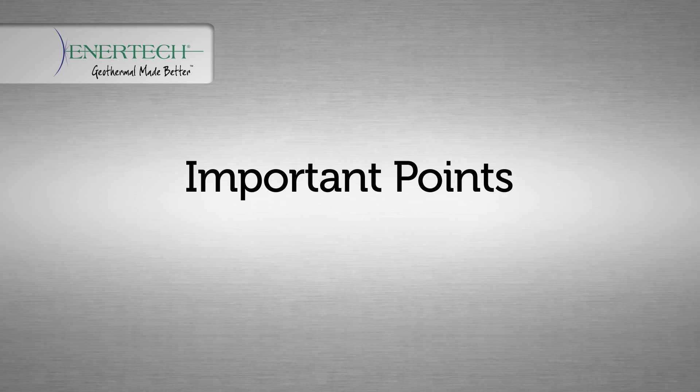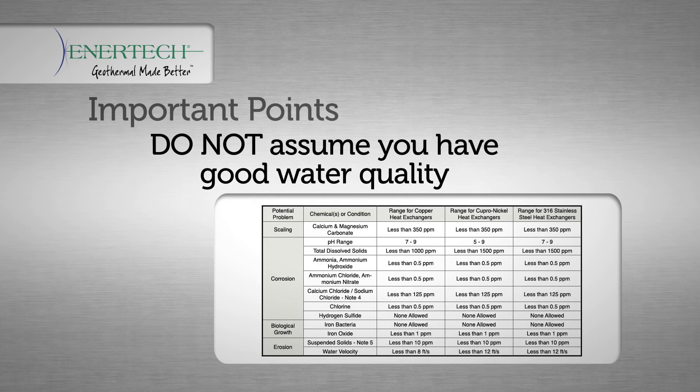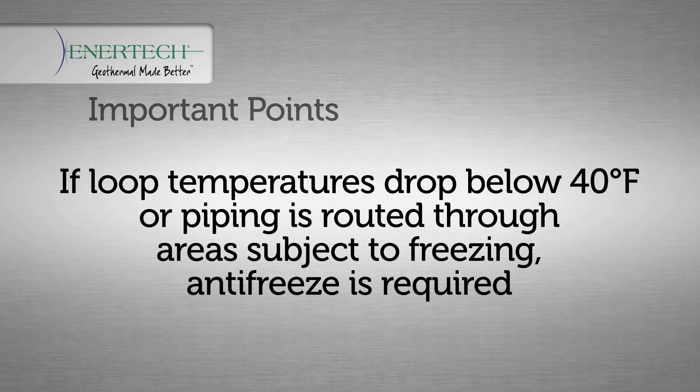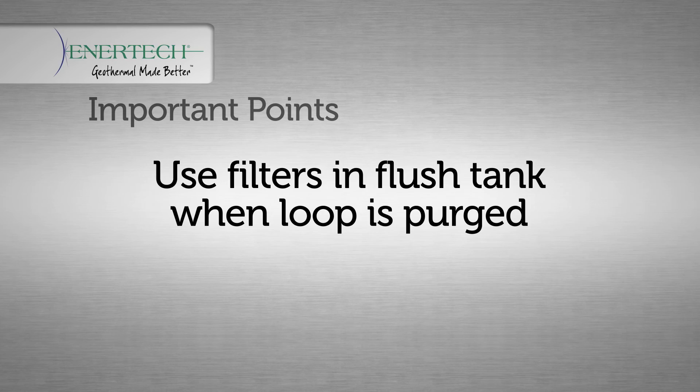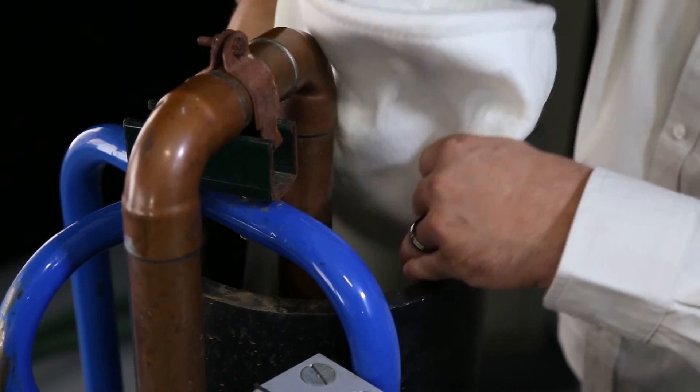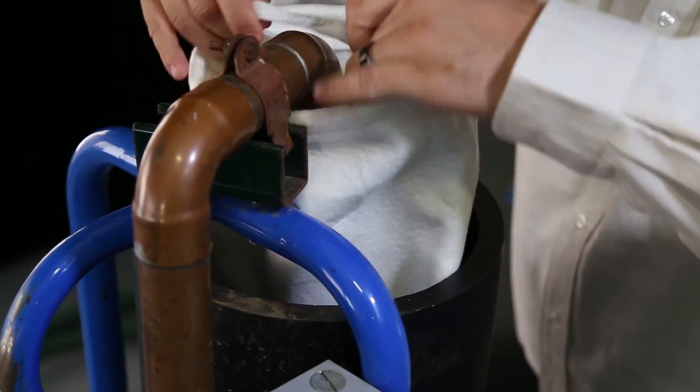Some other important points. Don't assume you have good water quality. Water quality should be tested and compared to the installation manual water quality guidelines. In areas where minimum entering loop temperatures drop below 40 degrees or where piping is routed through areas subject to freezing, antifreeze is required. Loop debris is particularly tough on pumps. We strongly recommend using filters in the flush tank while loop is being purged.